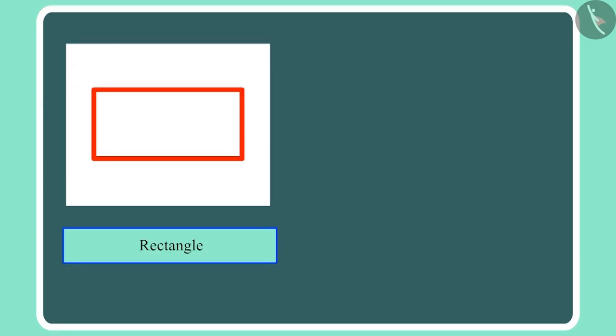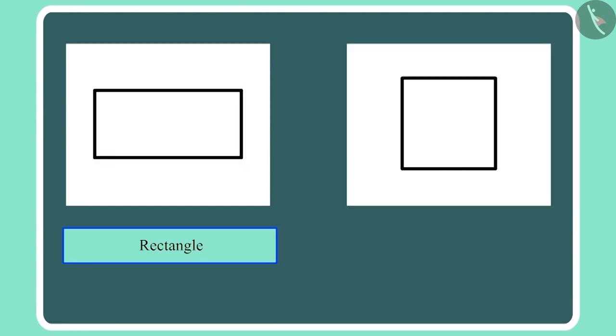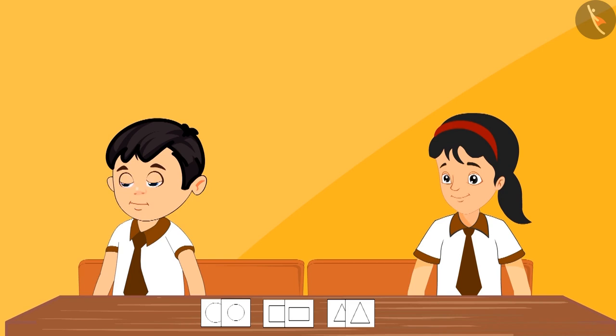And this shape is the rectangle. And we call it a square. Ma'am, what is the difference between square and rectangle? Both these shapes are made of four lines.